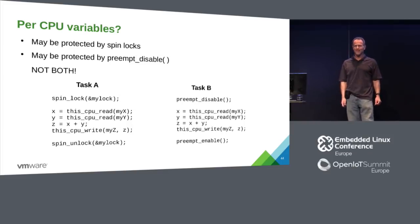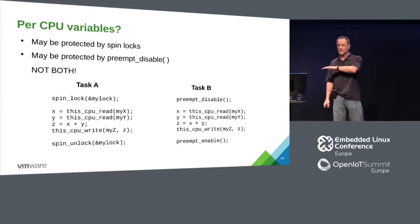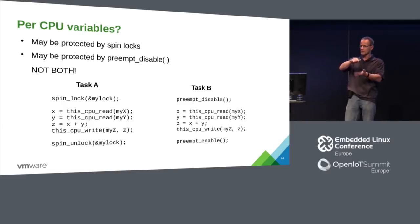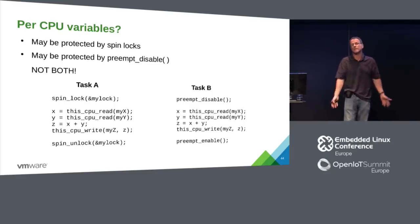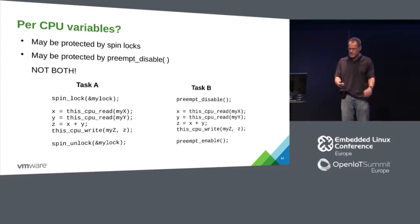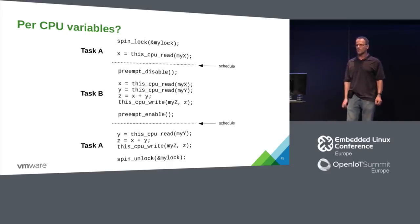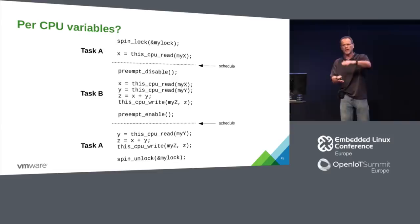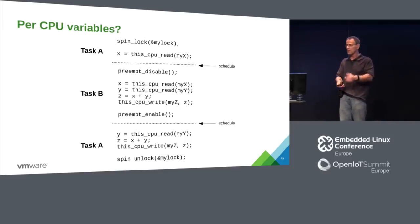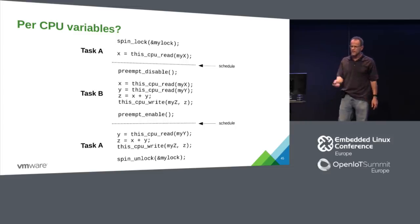Don't mix approaches: if task A grabs a spin lock thinking it disables preemption, and task B just calls preempt_disable/preempt_enable on the same per CPU data, you have a race — a higher-priority task can preempt between the spin lock and the per CPU operation. The operation that should be atomic isn't. The fix is to be consistent: if you use a spin lock for protection, use it everywhere for that data.